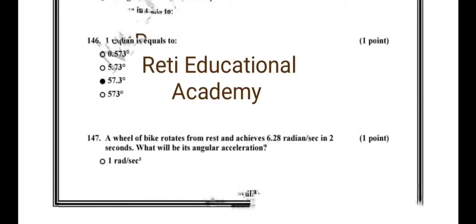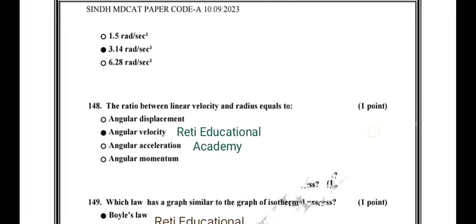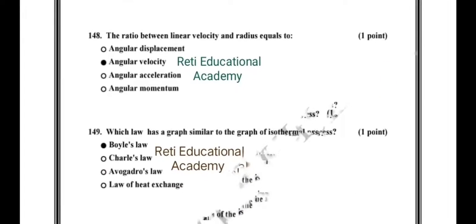Question number 147: a wheel of a bike rotates from rest and achieves 6.28 radians per second in two seconds; what will be its angular acceleration? The correct option is 3.14 radians per second squared. Question number 148: the ratio between linear velocity and radius equals to, and the correct option is angular velocity.